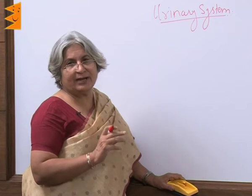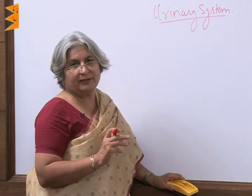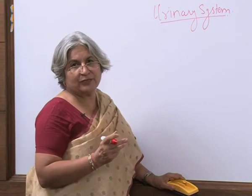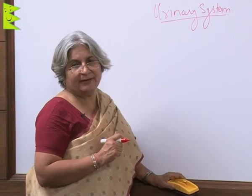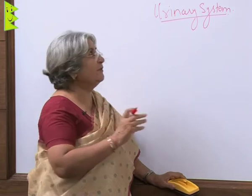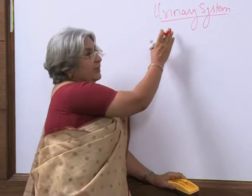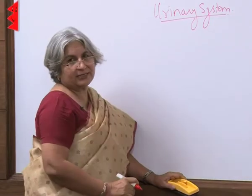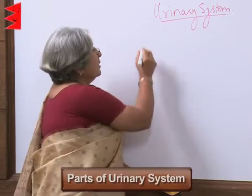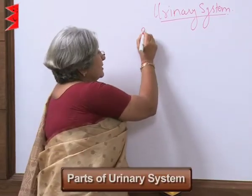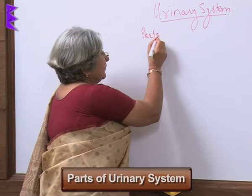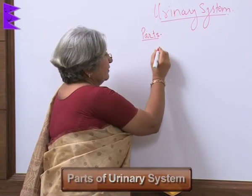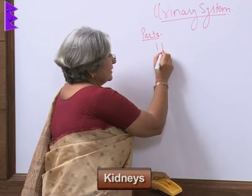We have already studied digestion and respiration and their waste products. Now we will focus on the urinary system. What are the main parts of the urinary system? First is kidneys.